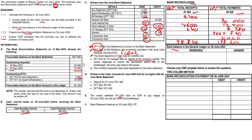Now we can calculate our bank balance. We had a favourable bank account balance of R49,100. We add our receipts of R98,840 and subtract our payments of R138,660, giving us R9,280. This figure also goes into the bank reconciliation statement.